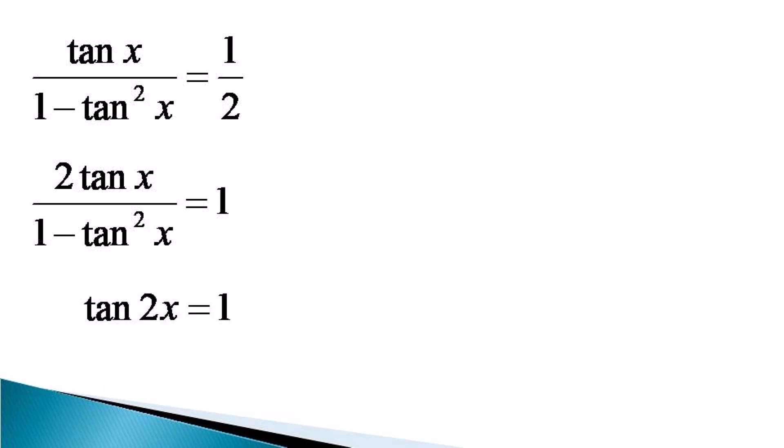So tan 2x equals 1 is the final equation, and 1 can be represented as tan of π by 4. So tan 2x equals tan of π by 4 is our resulting trigonometric equation.